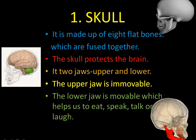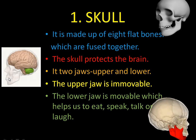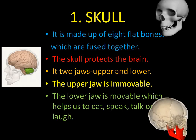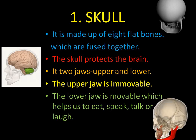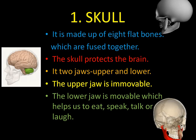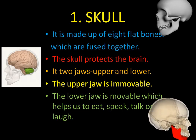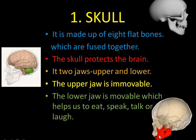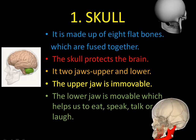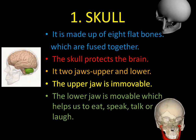In the skull, there are two jaws — one is the upper jaw and the lower jaw. The upper jaw is attached to the skull itself, and only your lower jaw is movable. When you eat, only the lower jaw — that red section — is movable, while the upper jaw is immovable. This lower jaw helps you to eat, speak, talk, and laugh.